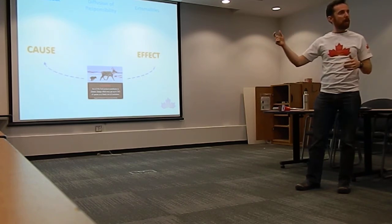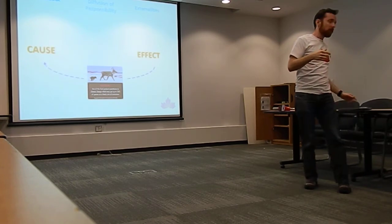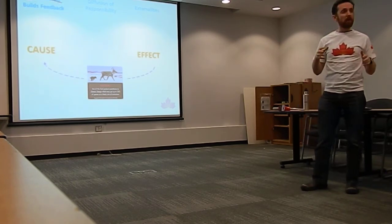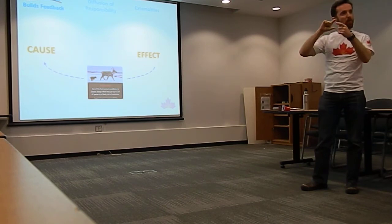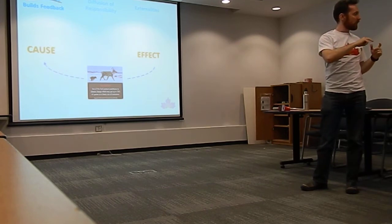What this idea does, quite simply, is it counteracts the current moment bias just by building feedback. By bringing that faraway consequence into the here and now using text and image. It takes a problem with no feedback and builds feedback. It addresses one of the aspects of climate change, why it's hard for us to collectively address. And it addresses an aspect of human nature in this simple, low-cost approach.